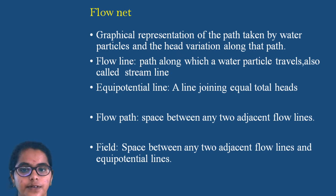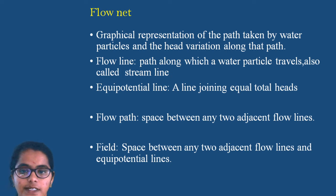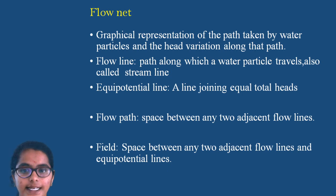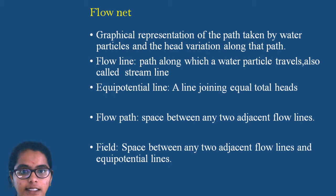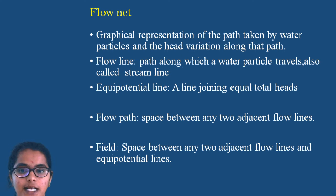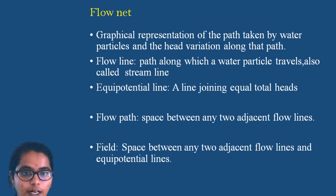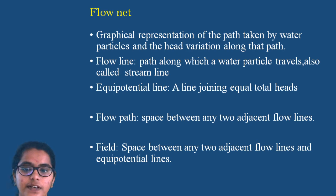Hello students, today we are going to discuss about flow net. This concept is there in the second unit, second chapter. Flow net is a graphical representation of the path taken by water particles and the head variation along the path. If we draw the path followed by the water particles and show the head variation along the path, that graph is called a flow net.